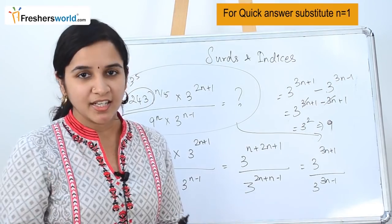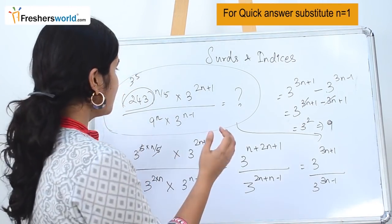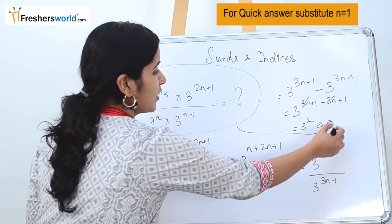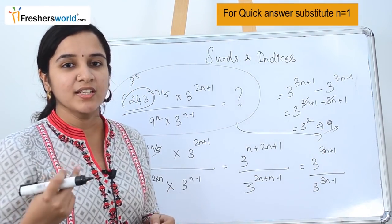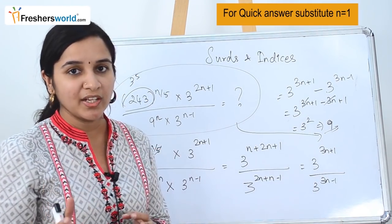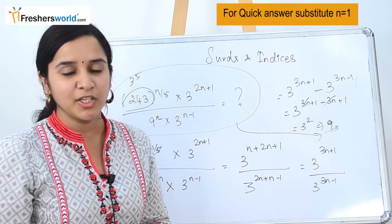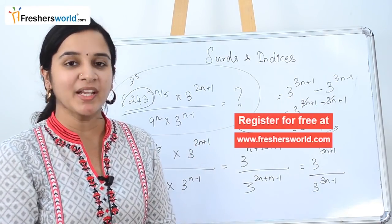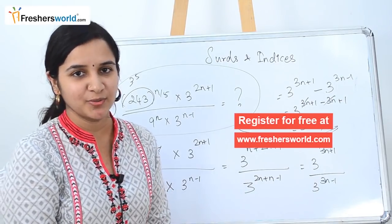Basically, in Surds and Indices, it is all about your simplification technique. The values given in the question look very large, but the answers are in simplified form. You can see the various ways to find the powers and cancel them to reach the simplest term. If you are looking for a job, kindly register at Freshersworld.com. Like this video, subscribe to our channel. Thank you.